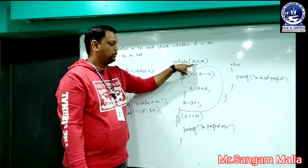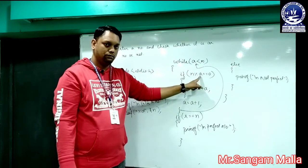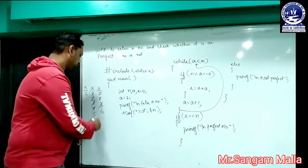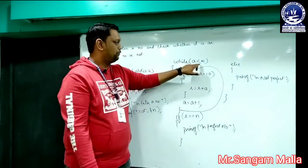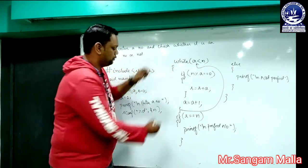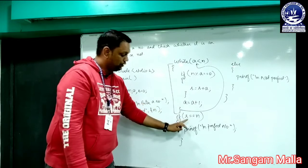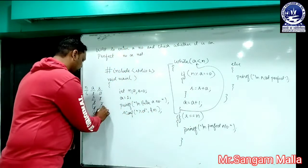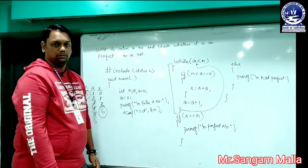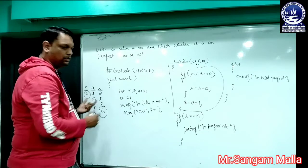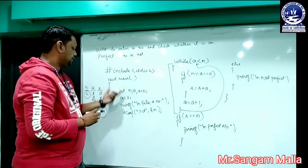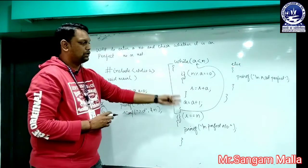When a becomes 6, condition 6 < 6 is false — it comes out from the loop. Now it checks: s == n, that is 6 == 6, true — the condition is satisfied and it prints "perfect number". We have seen that 6 is a perfect number, and our program also returns the same result. This is all about entering a number and checking whether it is perfect or not.